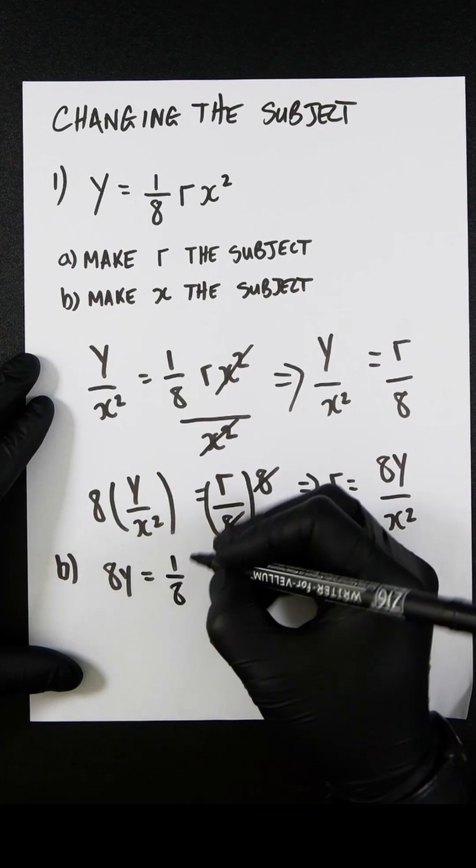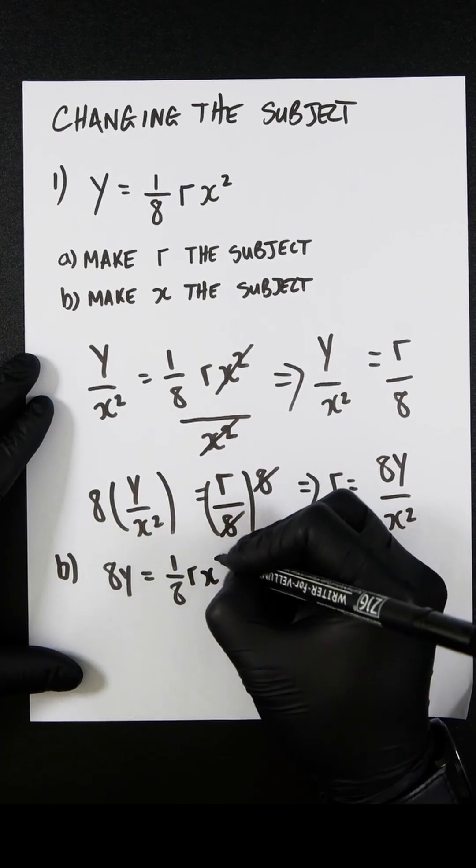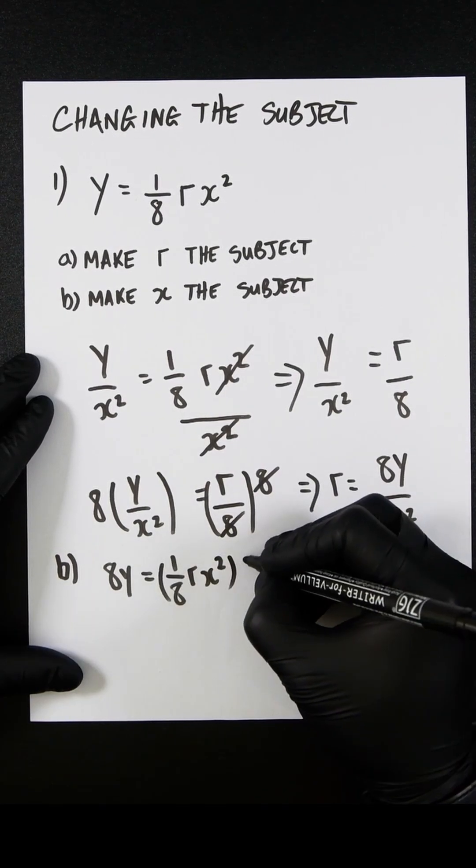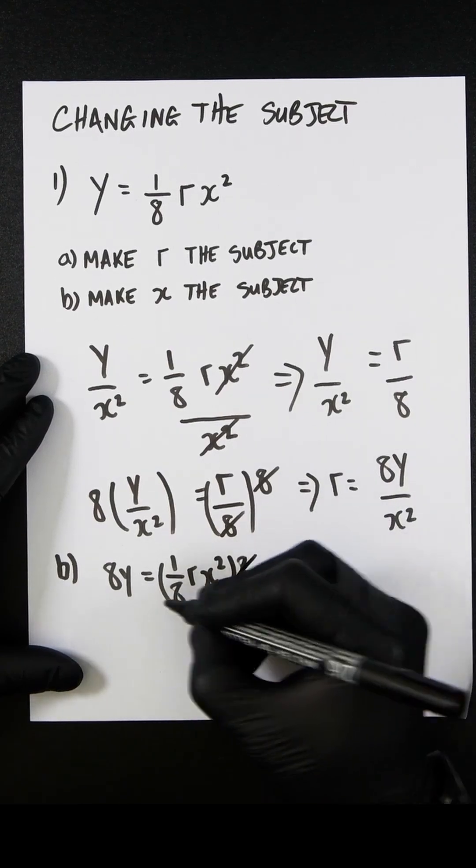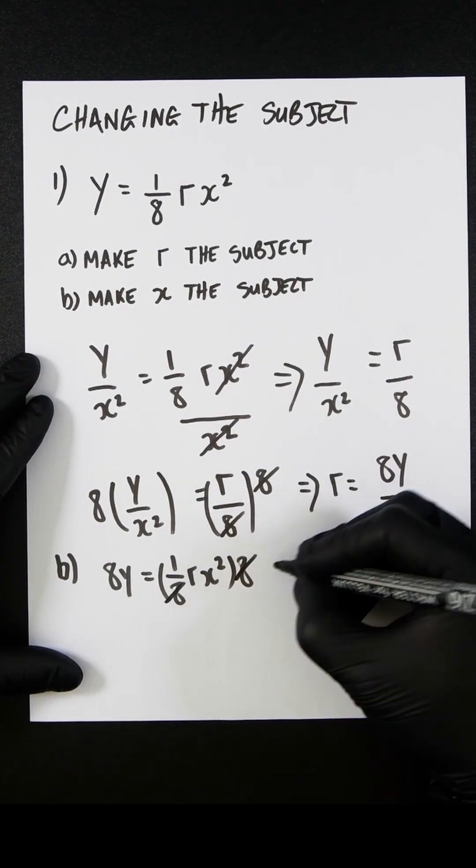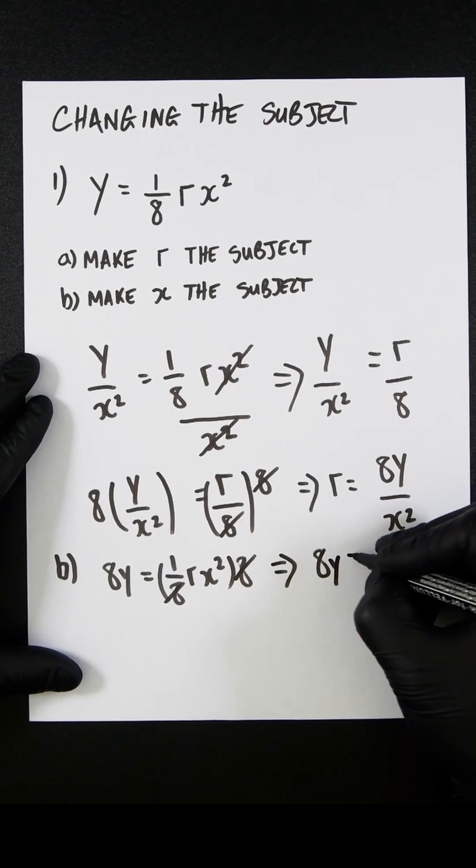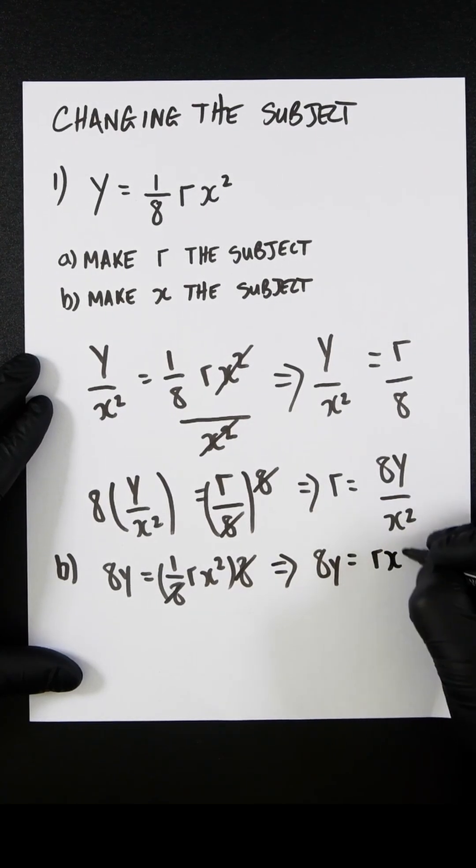So let's do 8y will equal an eighth r x squared multiplied by 8. This will cancel out this eighth, which leaves us with 8y equals r x squared.